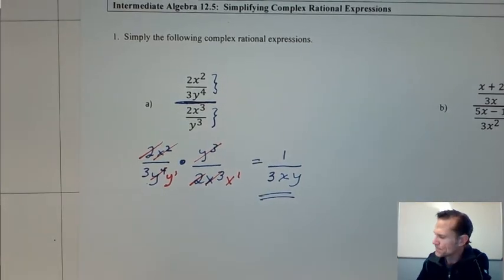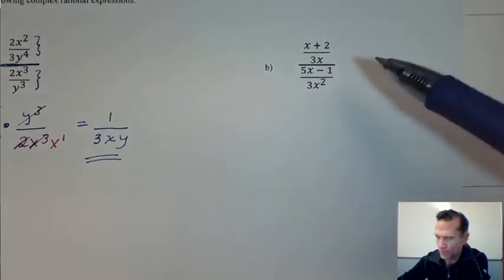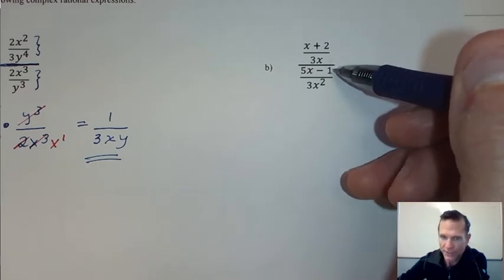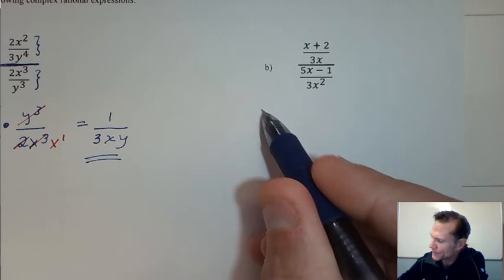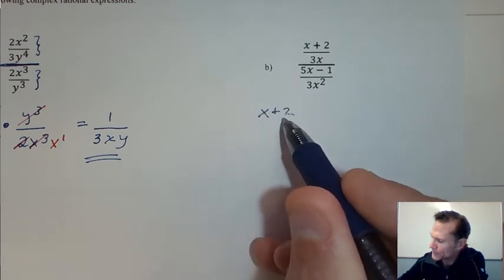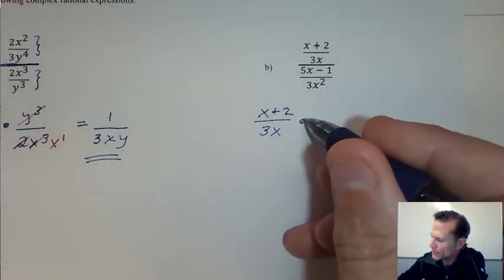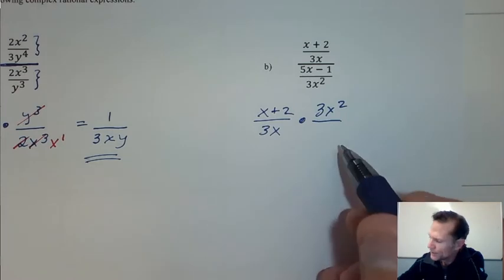Looking at this next one here, again I look at this, it's type one. We have a fraction inside of a fraction. What I'm going to do is I'm going to copy this out onto my paper from the Hawks system, copy the first fraction, change it to multiplication, and flip the second fraction.